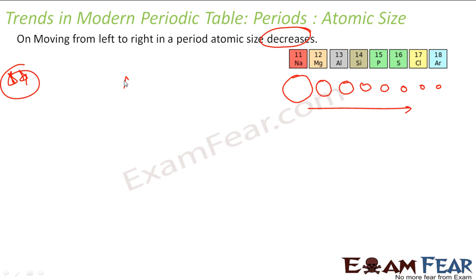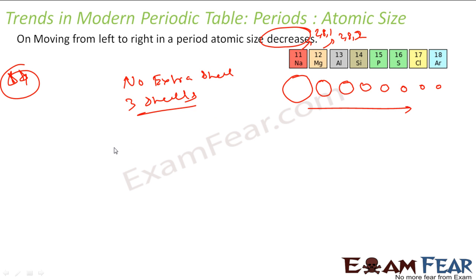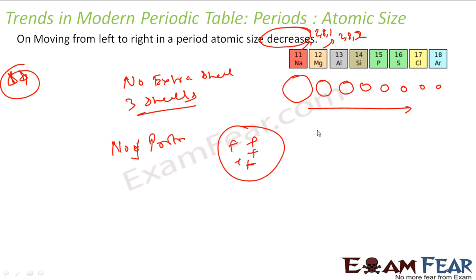Why? Because there is no extra shell — same shell. Each of these elements has the same number of shells. For example, the electronic configuration is 2-8-1, 2-8-2 and so on, so all have three shells. Now, as the atomic number increases, the number of protons in the nucleus increases, so it has more and more positive charge. The positive charge increases, so the power of the nucleus to attract electrons also increases.